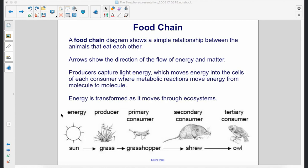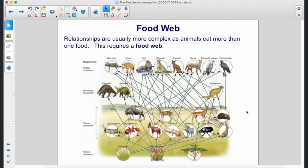Energy is transformed as it moves through ecosystems. Relationships are usually more complex as animals eat more than one food. This requires a food web.